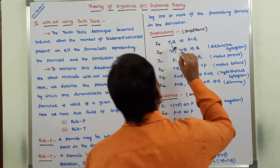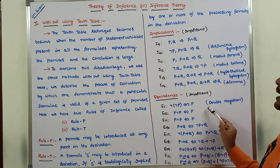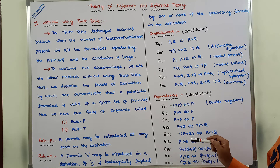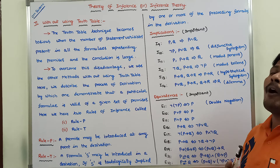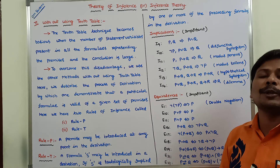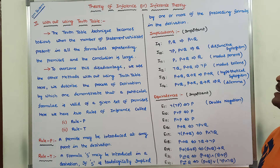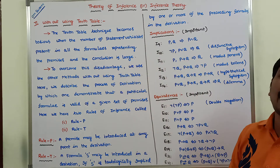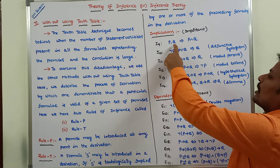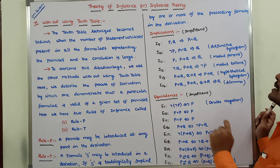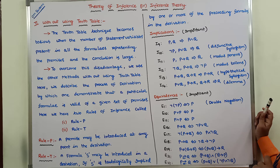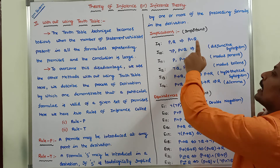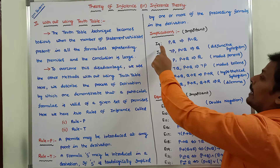These are the important implications and important equivalences that are mostly used in the theory of inference without using the truth table method. Implication I9: P and Q implies P and Q — whenever P and Q occur in the derivation, we combine them using the AND connective, using Rule I9.